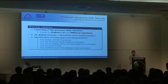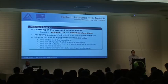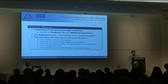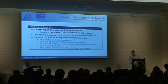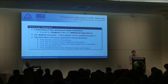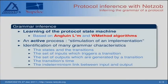One word on the grammar inference. The goal is to retrieve the state machine of the protocol. It's based on two well-known algorithms. It's an active process — you use an implementation of the protocol that you can stimulate, and you can retrieve the states and transitions between states.